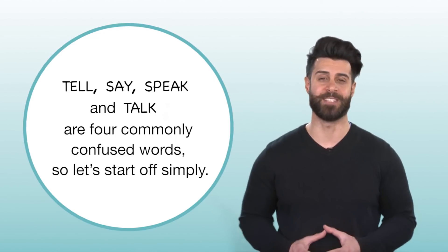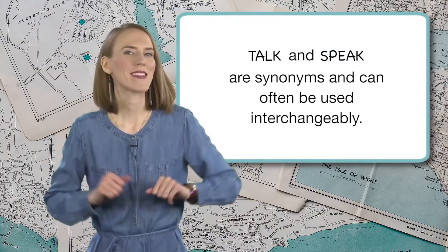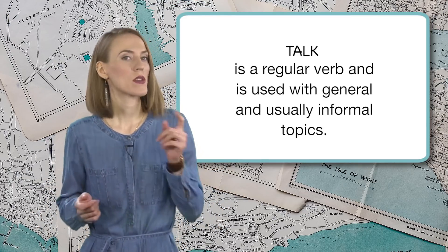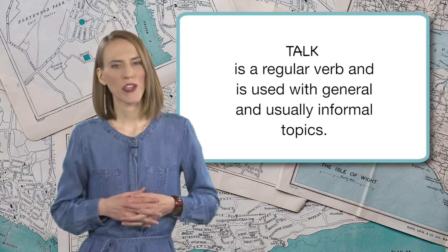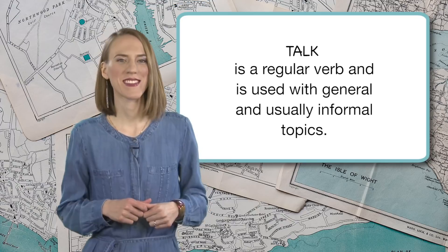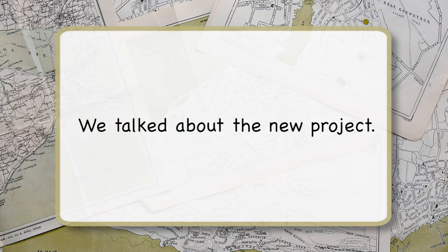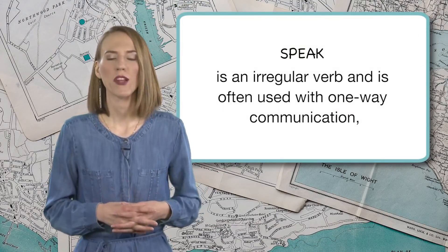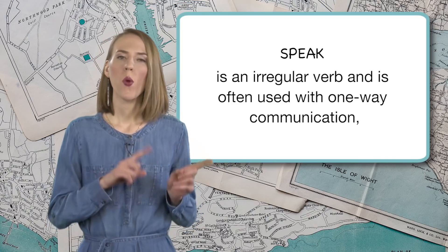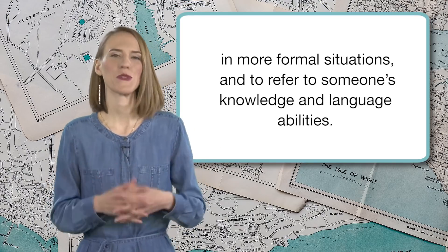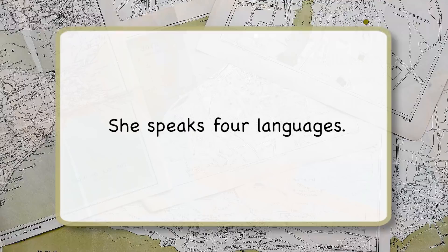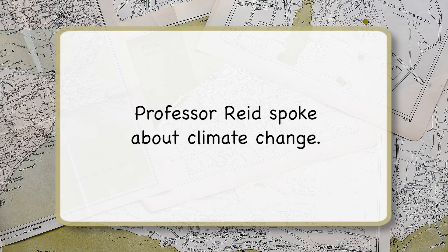So let's start off simply. Talk and speak are synonyms and can often be used interchangeably. Talk is a regular verb and is used with general and usually informal topics. We talked about the new project. Can I talk to you? Speak is an irregular verb and is often used with one-way communication in more formal situations and to refer to someone's knowledge and language abilities. She speaks four languages. Professor Reed spoke about climate change.